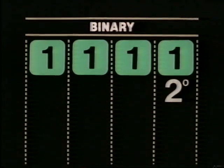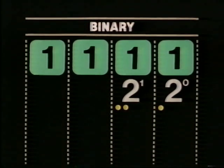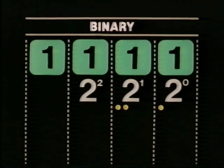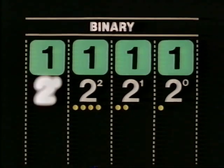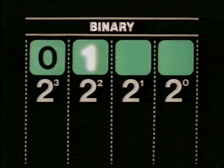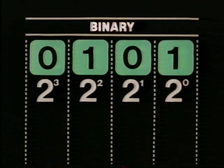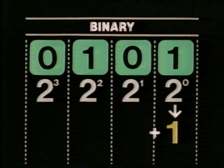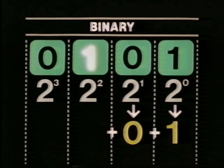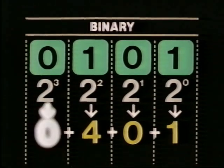The first position on the right is for two to the zero power, or one. The second position is for two to the first power, or two. The third is for two to the second power, or four. And the fourth is for two to the third power, or eight, and so on. So the binary number 0101 has a value of one times two to the zero power, or one, plus zero times two to the first, or zero, plus one times two to the second, or four, plus zero times two to the third. The sum? Five.